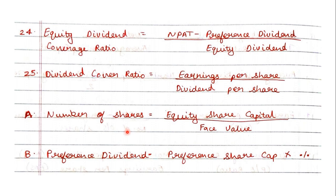So these are basically the various types of ratios which all need to be covered. The ones I told you are very important need to be noted down well; the ones I said are not that important, just go through once. In particular, the last A and B formulas — number of shares and preference dividend — are the most important ones, as they appear in nearly every sum. I hope everyone has noted down all those ratios, and with that we will be ending this video. Thank you.